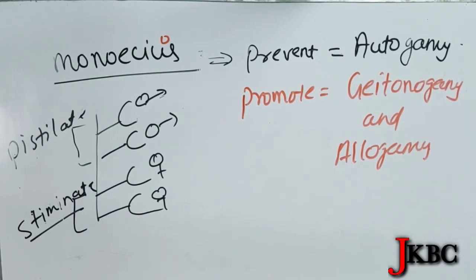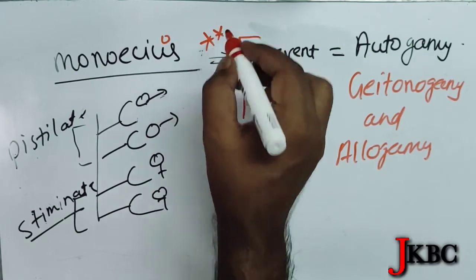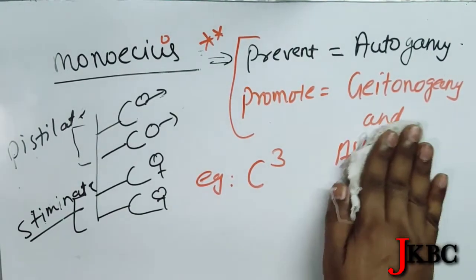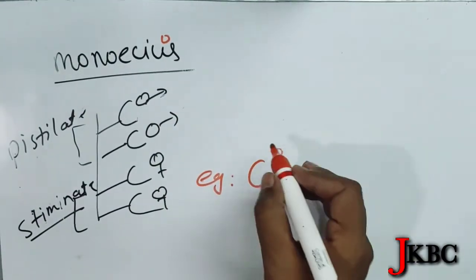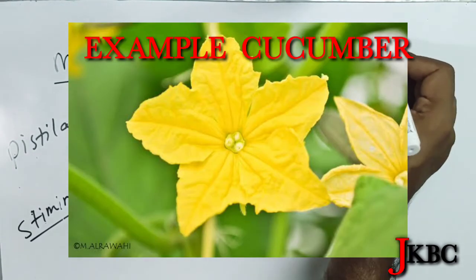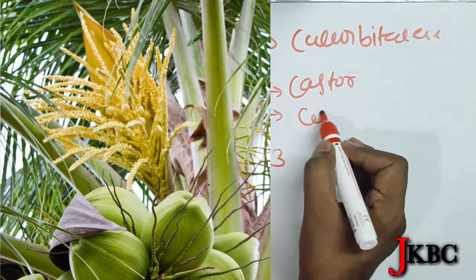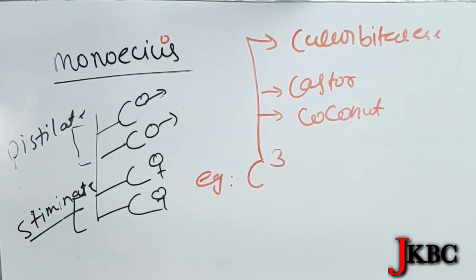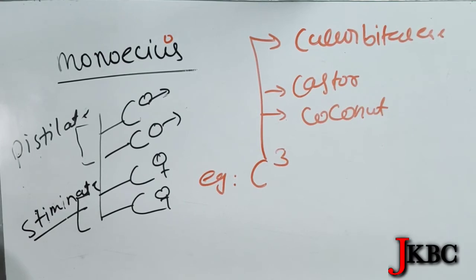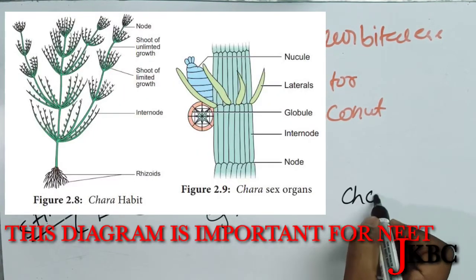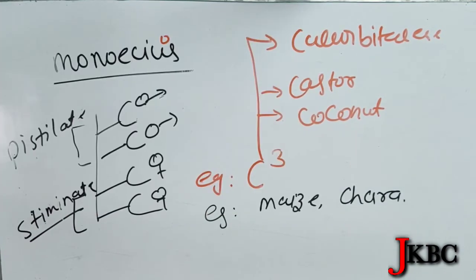Now, important for your NEET exam — remember C-cube: the first is Cucurbitaceae, second is castor, and third is coconut. These examples are given in your NCERT, so they are most important because they are from sexual reproduction in flowering plants. Another example is maize and carrot. So write in your NCERT — all these five examples of monoecious will be given in your 11th and 12th class NCERT.